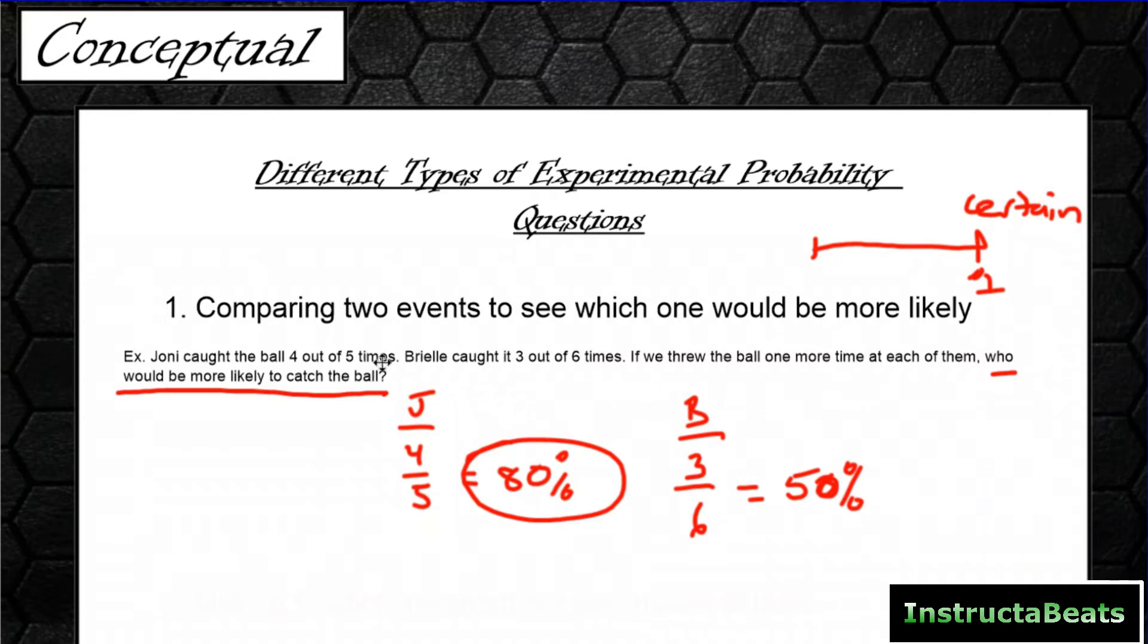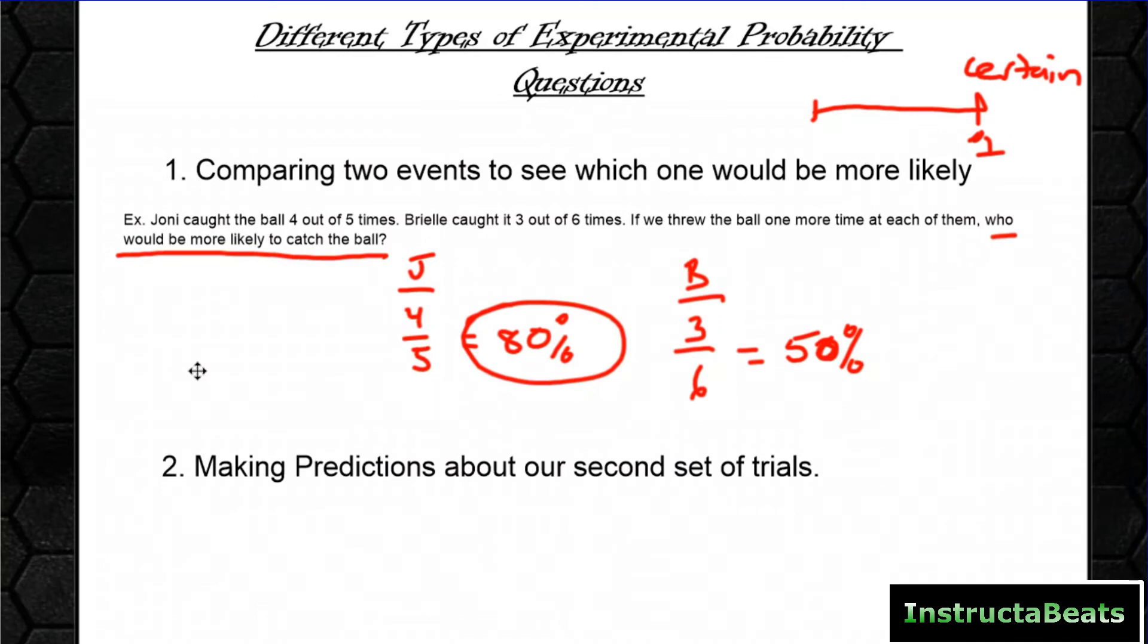The second type of question is about making predictions about our second set of trials. So when you start off an experiment, you have a theoretical probability, right? Just like we did with the heads and the tails. We thought that it would be about 50% heads, 50% tails. Then we did the experiment and we stopped after 10. So our first experiment had 10 trials. Then what you're going to do is you're going to use your new experimental probability to make predictions about the second set of trials. And that involves a little bit of math.